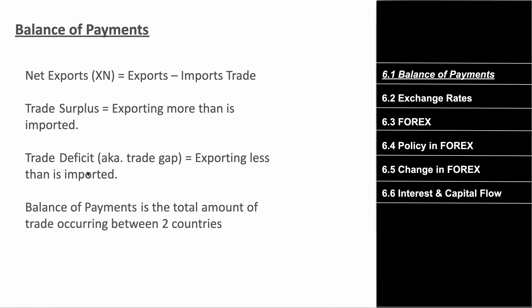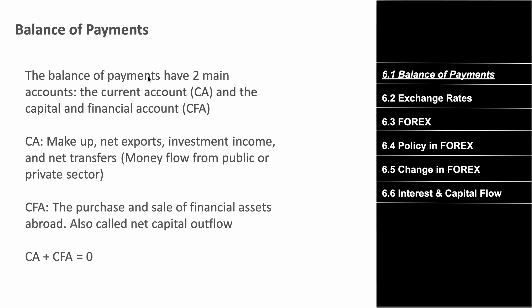The balance of payments is the record of trade between two countries. There are two main accounts: the current account (CA) and the capital and financial account (CFA). The current account covers general goods you buy from a country, net exports, investment income, and net transfers — money flows from public or private sectors, including any investments, exports, and transfers.